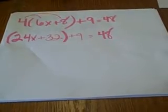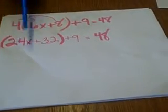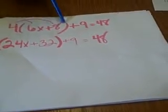So first you multiply. 4 times 6 gives you 24x. 4 times 8 is 32. And then you still have plus 9x, which equals 48.